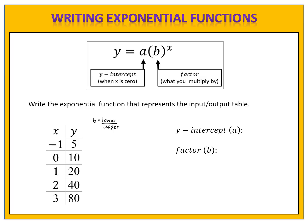Let's compare answers. We begin by looking for the y-intercept. In the table, I look where the x-value is 0 and find that the y-value is 10, so the y-intercept is 10. Now I need to determine the factor — the number I'm multiplying by to produce the outputs: 5, 10, 20, 40, 80.